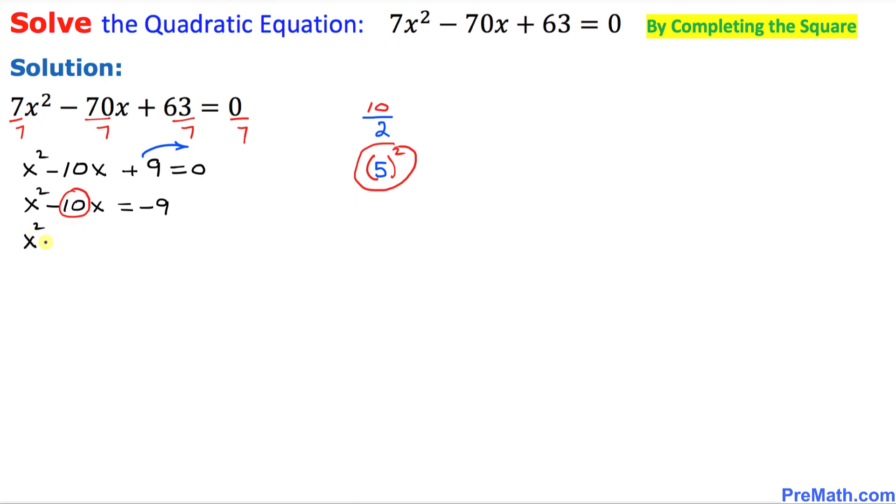So it's going to be x squared minus 10x plus equal to negative 9 plus. So now we are going to add this 5 squared on this side and 5 squared on this side.